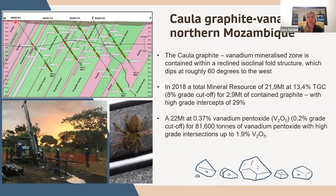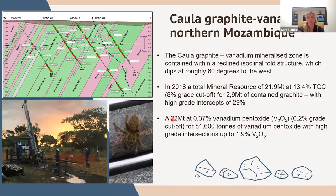We drilled orientated core boreholes at an incline and were able to see that the graphite fitted within a reclined isoclinal fold structure, roughly dipping about 60 degrees towards the west. We were able to declare a mineral resource of 2.1 million tonnes at an average grade of 13%, with a cutoff grade of 8%. It also had a byproduct of vanadium pentoxide running at 22 million tonnes at a 0.3% cutoff — quite a lucrative project.